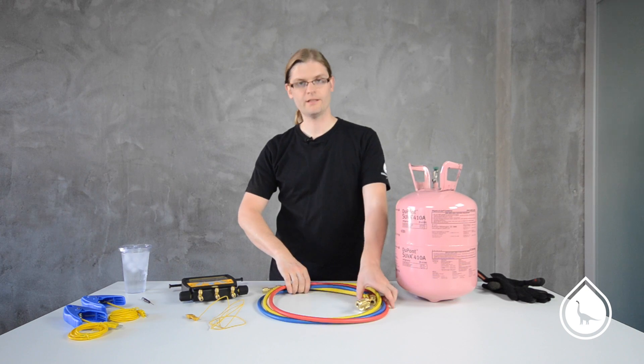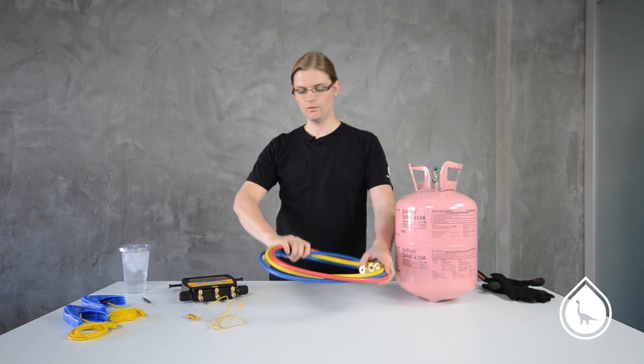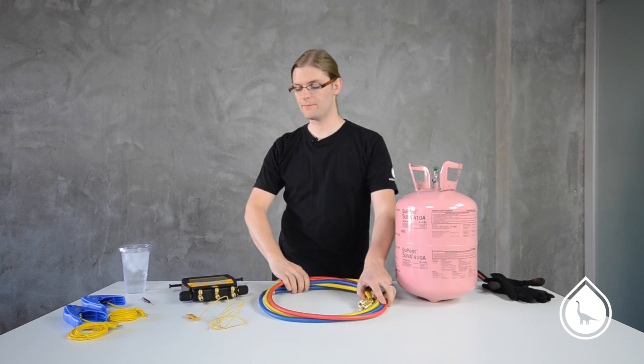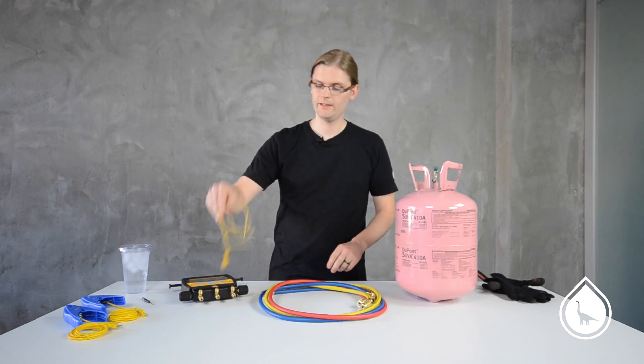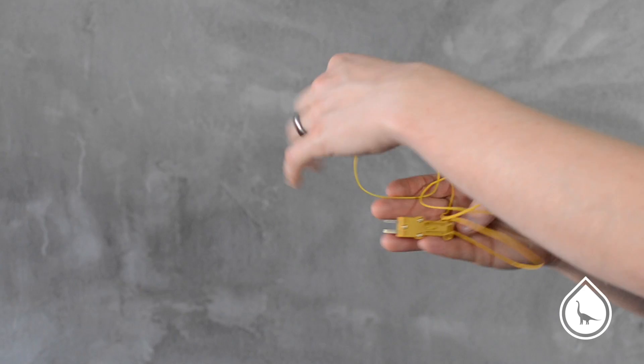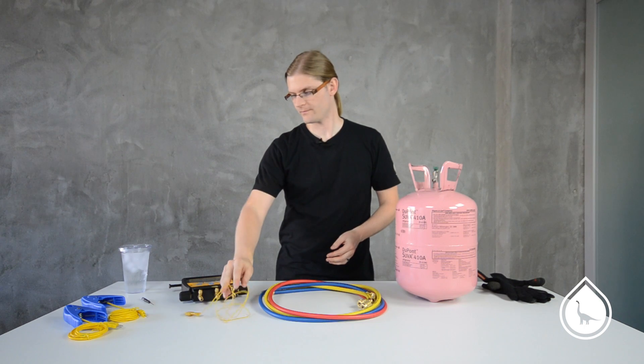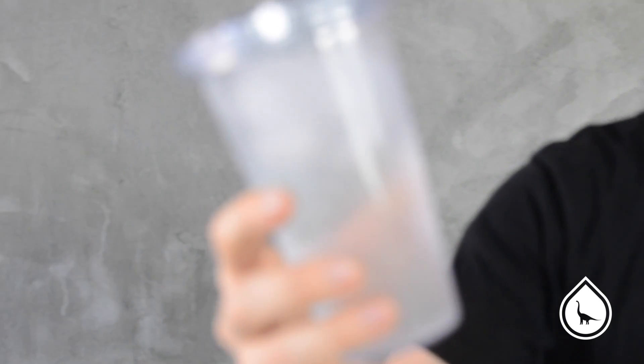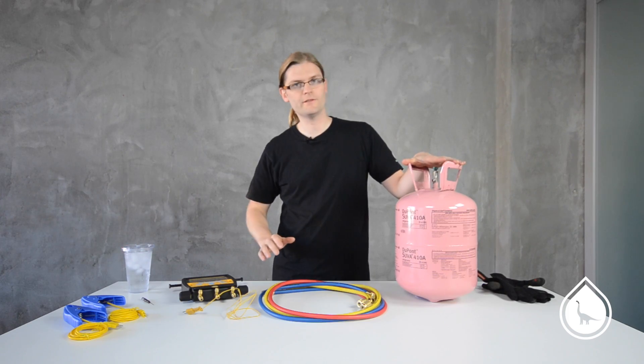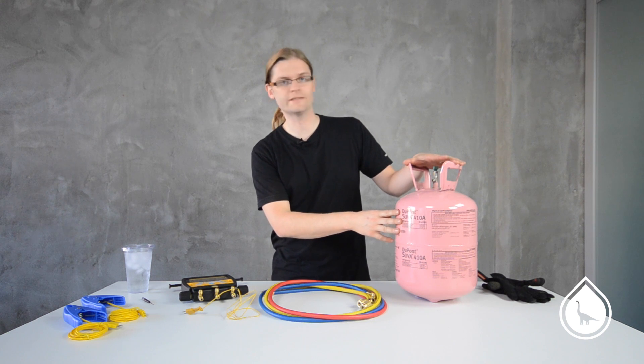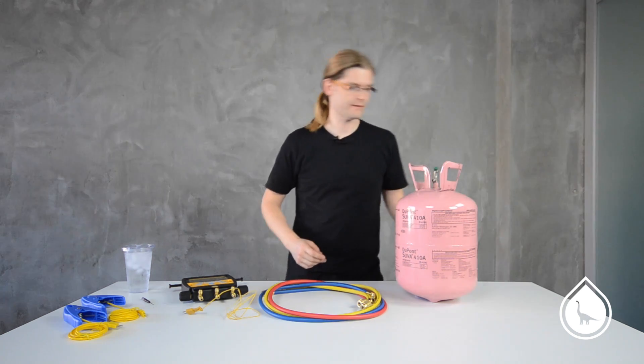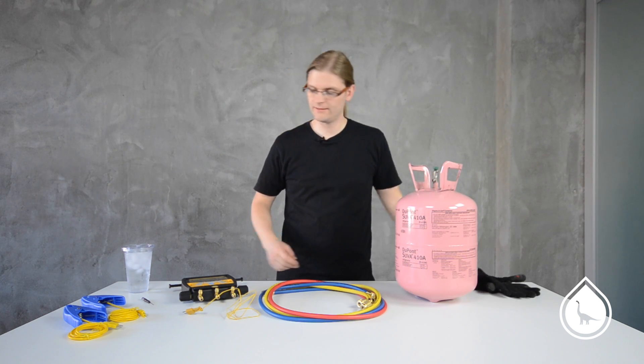You'll need a set of hoses or at least a single hose and some caps. You'll need a K-type thermocouple. Ball type is best. You'll want a glass of ice water and a can of refrigerant. Today we've got R410A as well as safety equipment and a small flathead screwdriver.